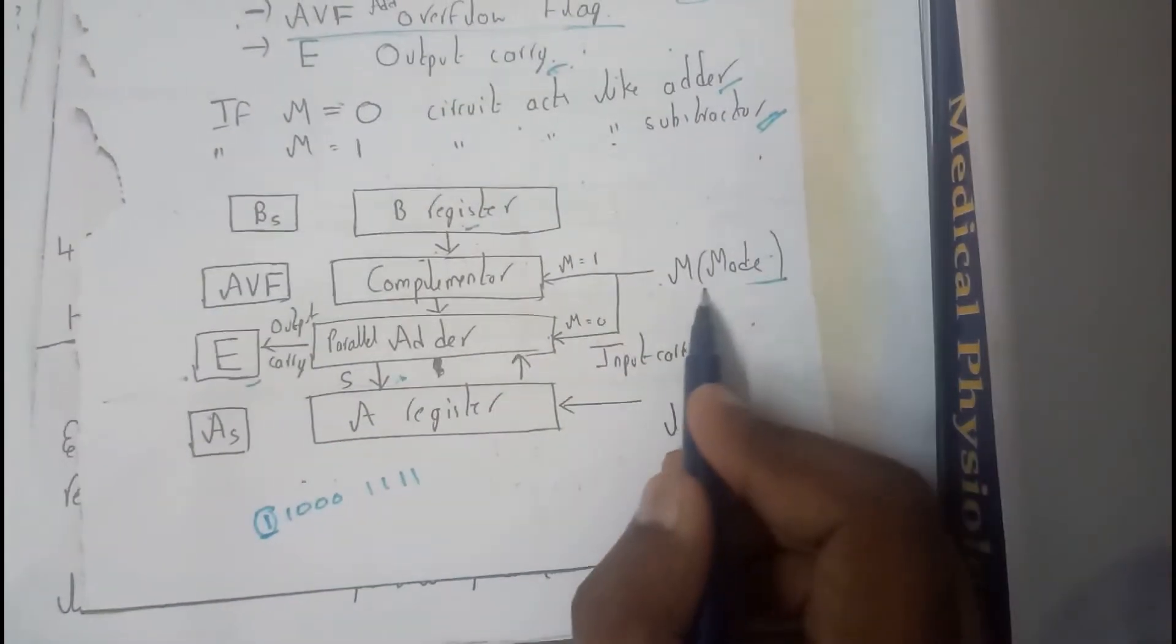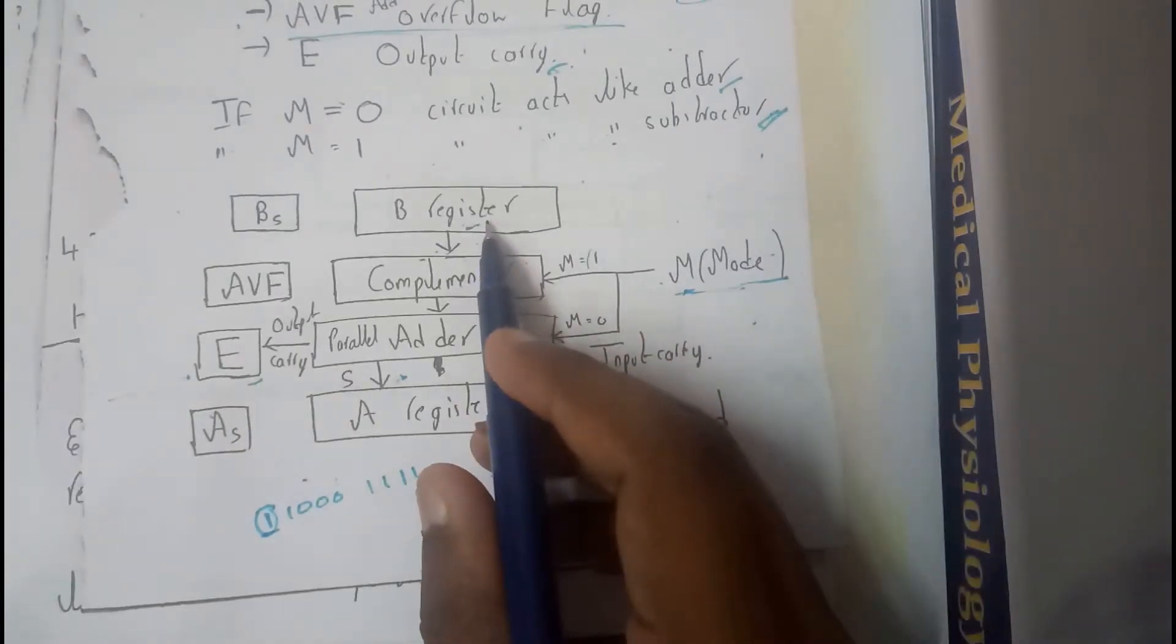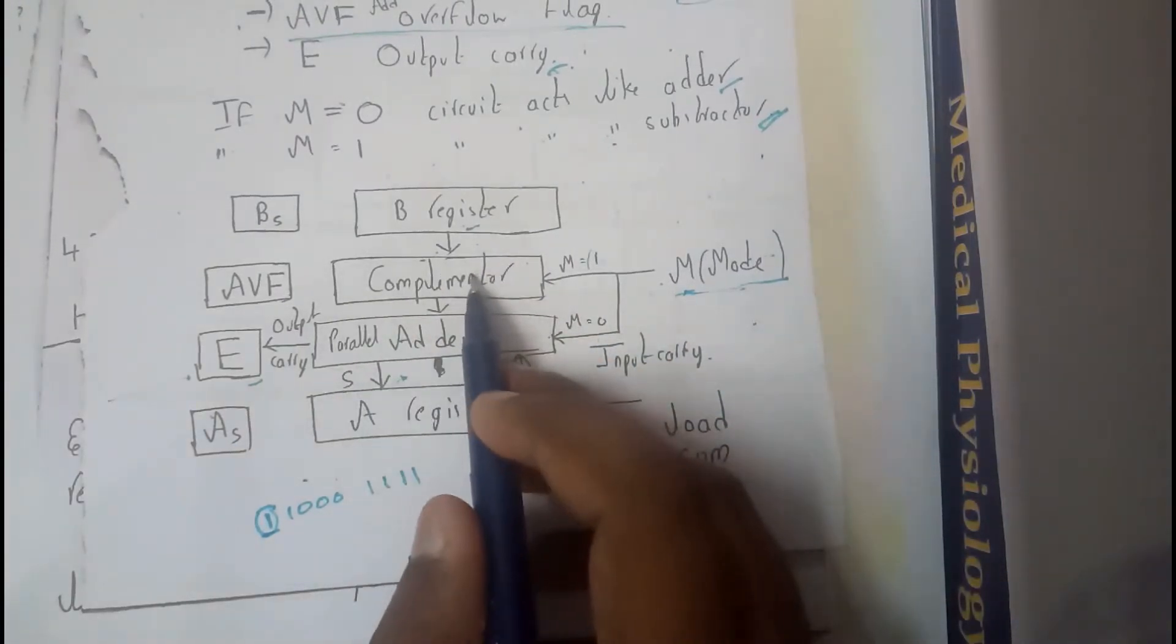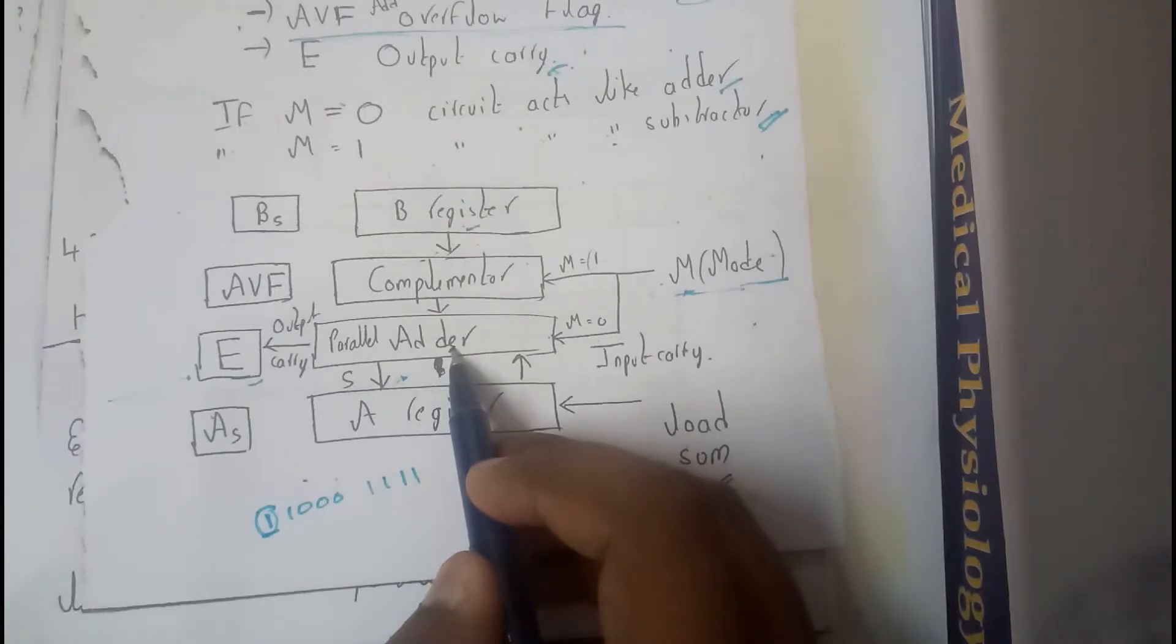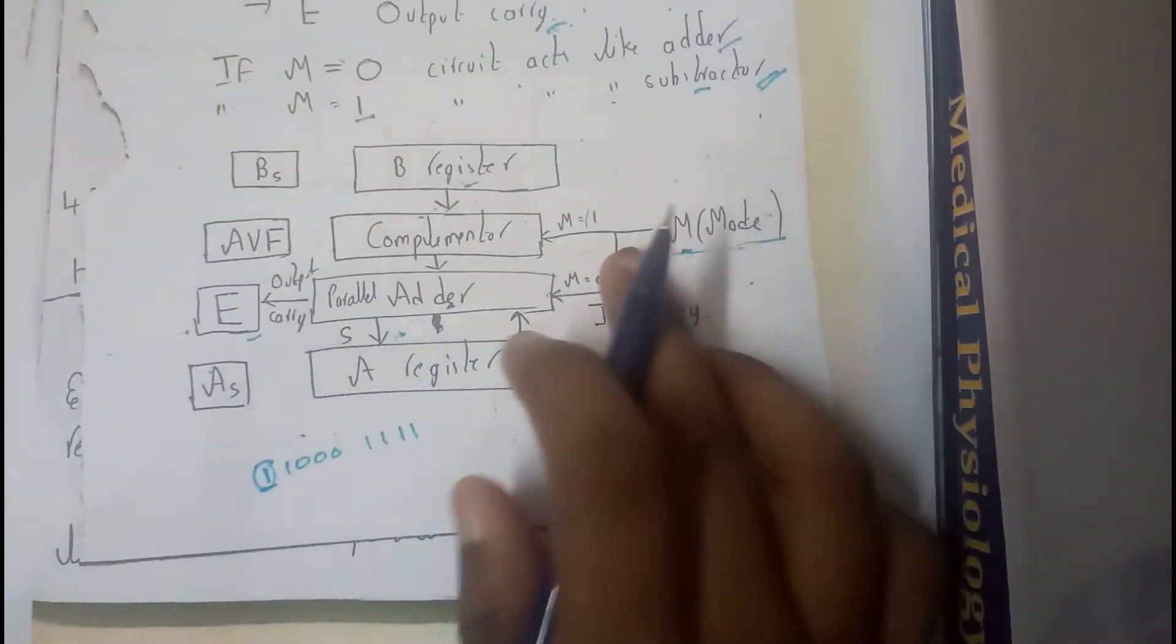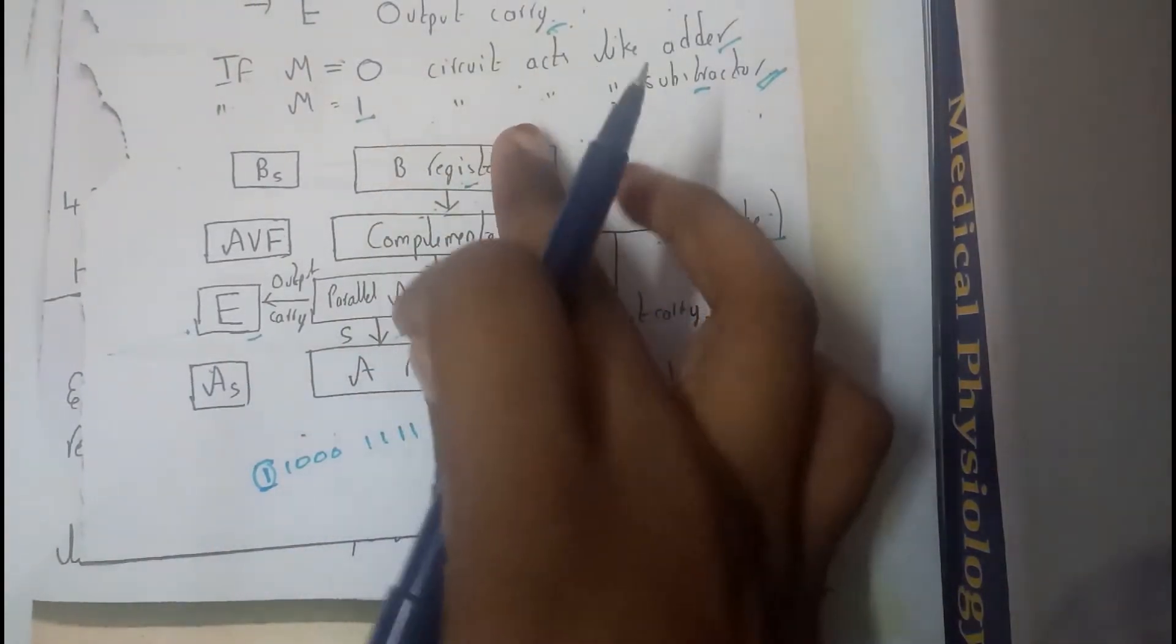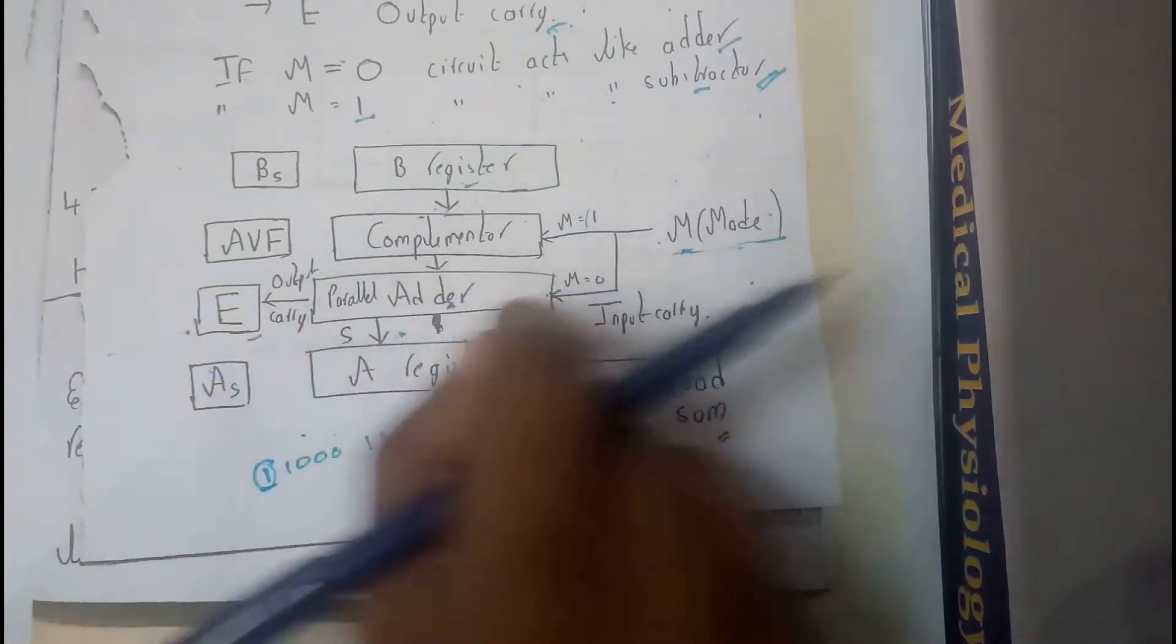So, basically depending on this mode guys, so if it is 1, the value from the B register will be directly transferred to the complementar, and then transferred to the parallel adder. So, that is the reason why 1 is nothing but a subtraction. Whereas, in mode 0, it directly goes to the parallel adder. So, the value of A and B will be directly added and stored.